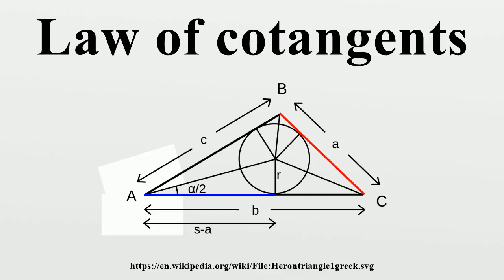For example, the two triangles near vertex A, being right triangles of width s minus a and height r, each have an area of one half r times s minus a. So those two triangles together have an area of r times s minus a, and the area s of the whole triangle is therefore.